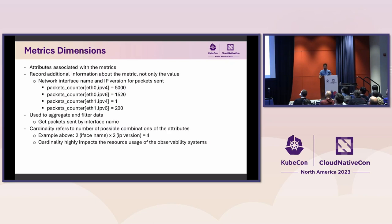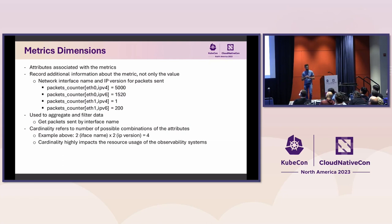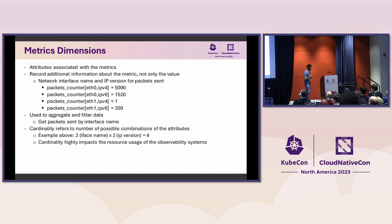Another concept to introduce quickly is dimensions. When we perform a measurement we not only care about the numerical value but we also want to capture additional information for that metric. Those are called dimensions, labels, or attributes. For instance, when capturing the number of packets being sent on our system, we don't only care about all packets — we also want to provide additional information like which network interface the packets are being sent on, or what the IP protocol is.